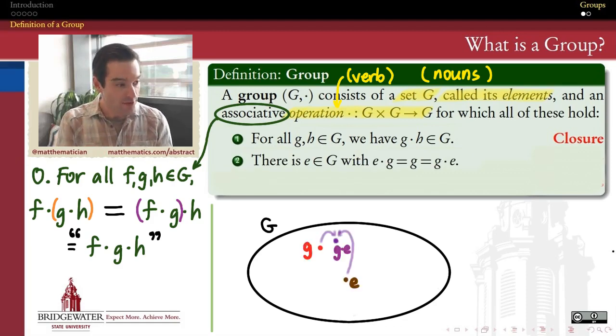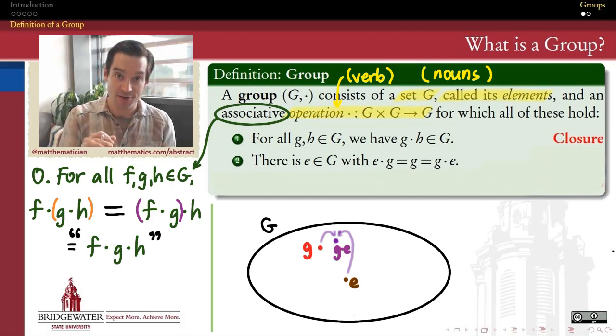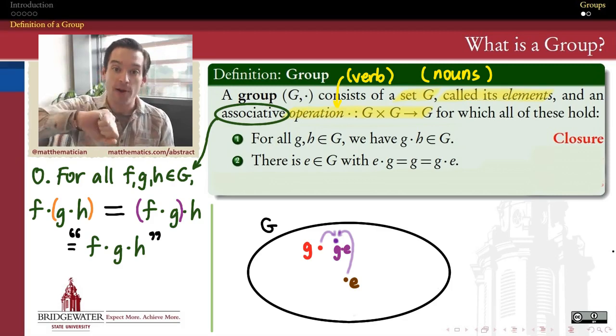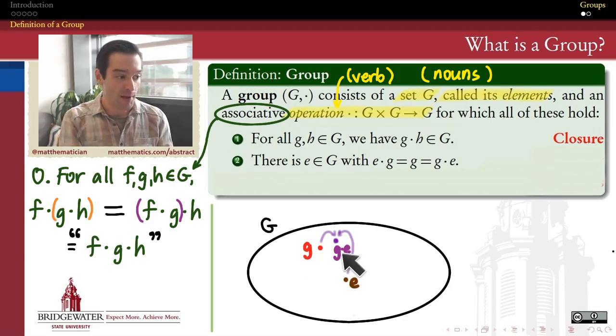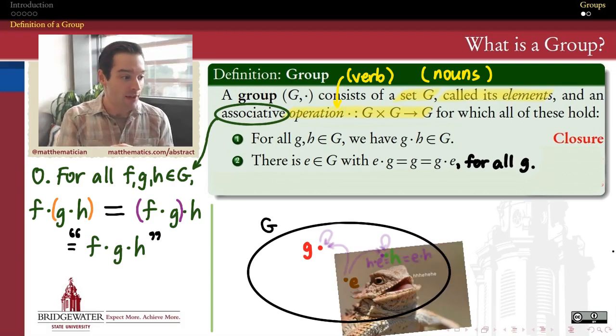Property number two says that there is an element, call it e, and that element has the property that when I act on any element g on either the left side or the right side by e, the result doesn't change g. So this is an element which, when we operate by it on either side of something, doesn't change that something. So g multiplied by e and e multiplied by g, both of those things are the same as g. So e, when it operates, leaves elements in place. We call e an identity element, and it needs to be something that holds every element of this group in place.